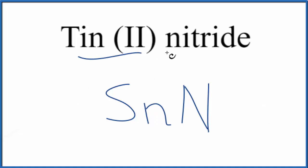But tin, that's a metal. Nitrogen's a non-metal. So this is an ionic compound we need to take into account charge when we write the name. For tin, we're given the charge on the tin. It's a transition metal, the Roman numeral. That tells us we have 2+.